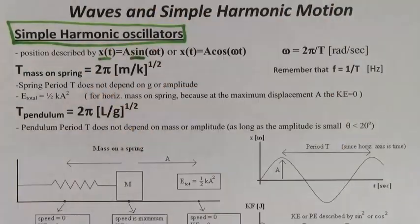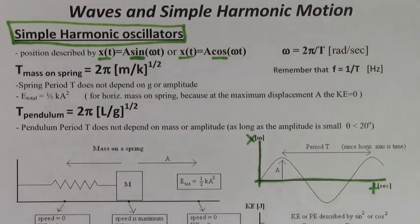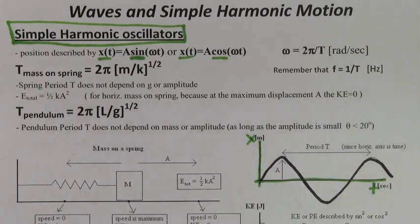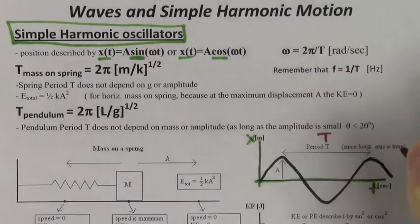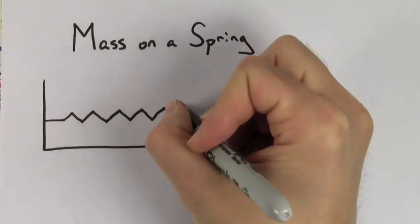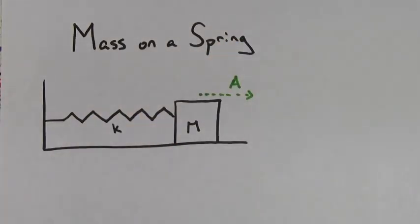Simple harmonic oscillators are any variable that change in time according to a sine or cosine function. The time it takes the oscillator to go through a complete cycle is called the period and it's measured in seconds. The amplitude of a simple harmonic oscillator is the maximum displacement from equilibrium.